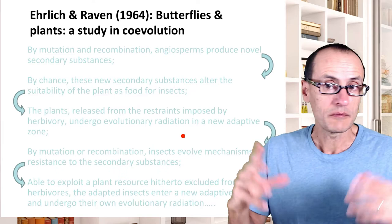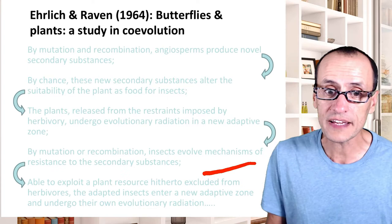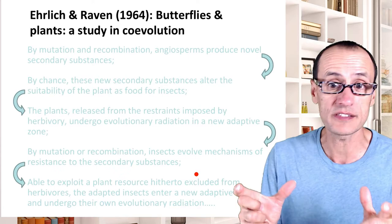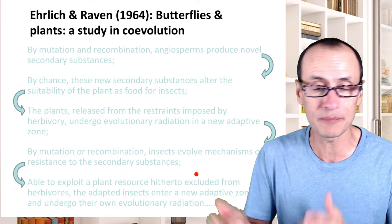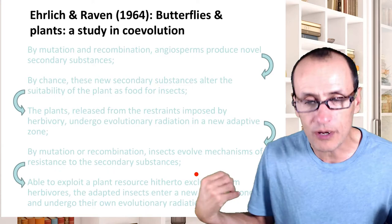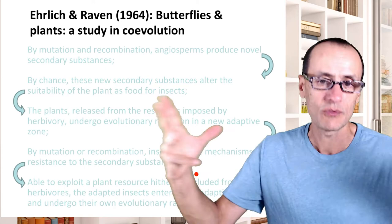Likewise, by mutation or recombination, insects can also evolve mechanisms that allow them to overcome these secondary plant substances that were previously causing them to have lower fitness. Any of those insects that just by chance had this ability were at an advantage over others in the population, and their genes spread. They find all these food plants available with no competitors on them, and their populations grow and speciate.